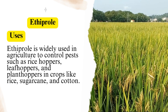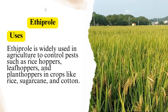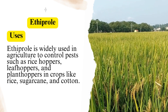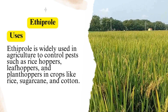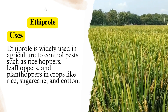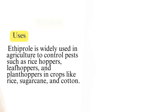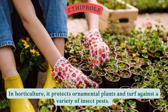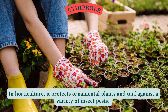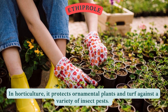Ethiprol is widely used in agriculture to control pests such as rice hoppers, leaf hoppers, and plant hoppers in crops like rice, sugar cane, and cotton. In horticulture, it protects ornamental plants and turf against a variety of insect pests.